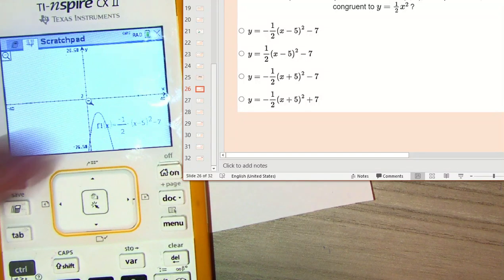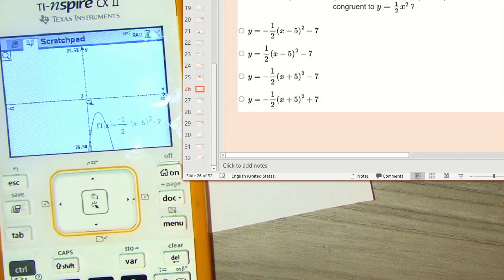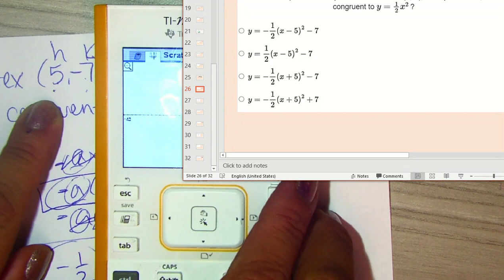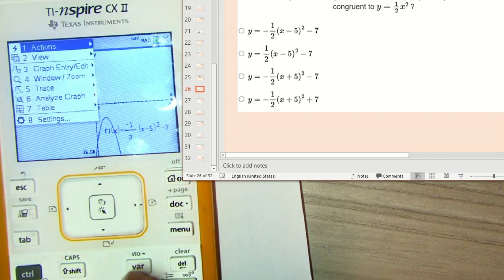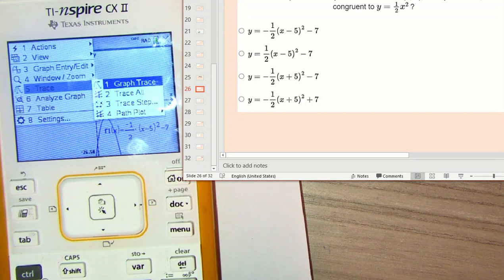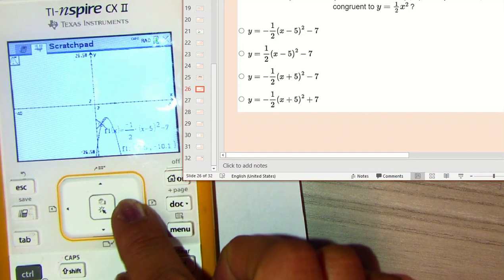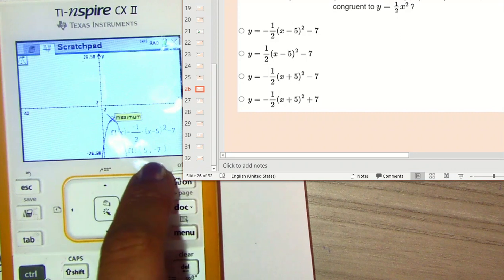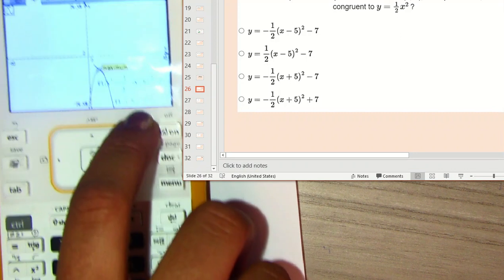There it is. It's in there. So that one's definitely face down. And then you need to check that it matches the vertex, the vertex of (5, -7). So we're going to go to menu, trace, graph trace, and then go to that vertex right there. It will tell you maximum or minimum. So right here, the vertex is (5, -7).